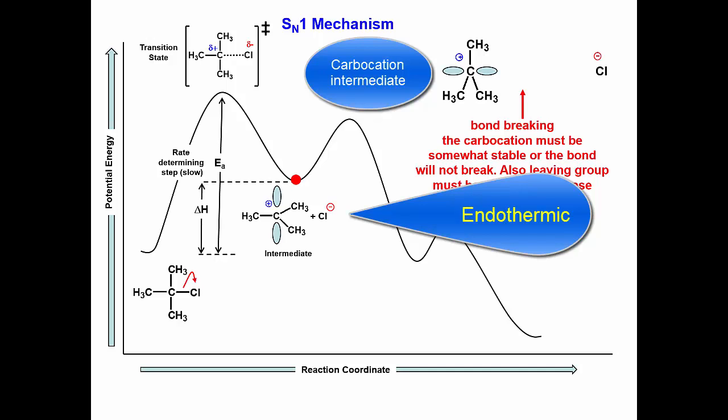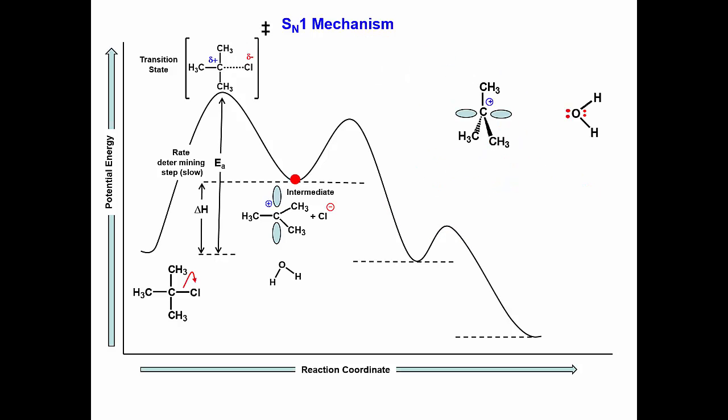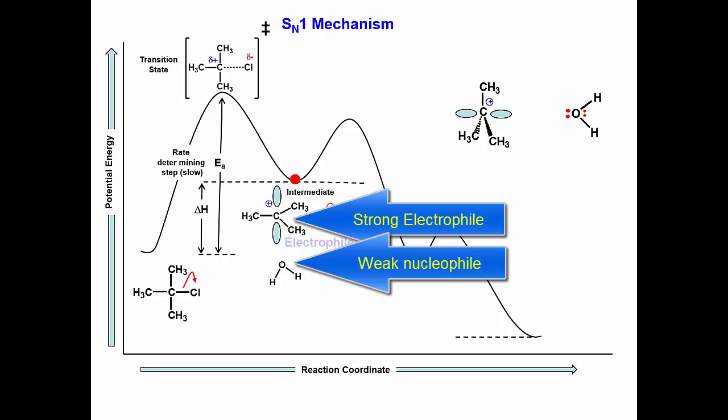Once the carbocation intermediate has formed, it can now act as an electrophile and accept electrons from a nucleophile. Water is present in this reaction and even though it is a weak nucleophile, it will donate its electrons to the electrophile.